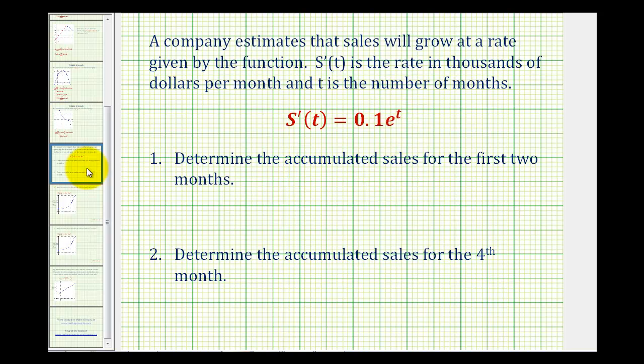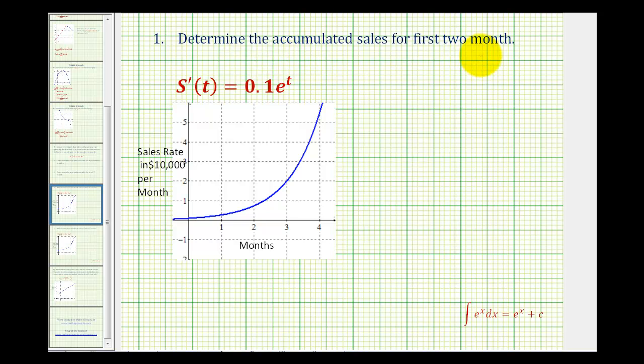Let's take a look at this graphically. So to determine the accumulated sales for the first two months, if we integrate the given function over the interval from zero to two, it will give us the accumulated sales.